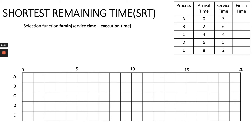Shortest Remaining Time works similar to Shortest Process Next, with the only differentiating factor being that it allows preemption. The selection function requires finding the minimum of service time minus execution time. We need to compare the shortest remaining time between the current available processes in the queue.